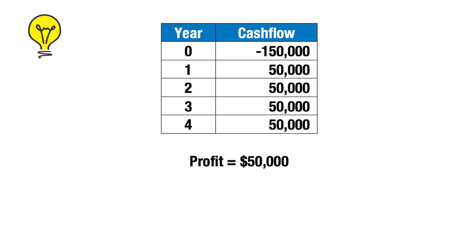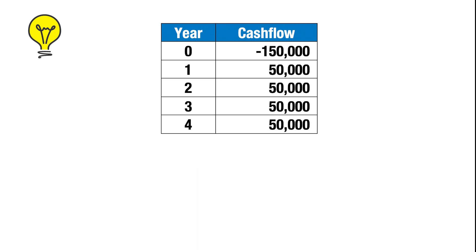Let's say you purchase an asset today for $150,000 and use that asset to generate $50,000 of revenue for the next four years. You might be thinking that you're earning a $50,000 profit, but in reality you aren't because of the time value of money. The $50,000 you're receiving each year is actually worth less today if we consider your cost of capital — let's call that 10%. The net present value is the difference between the present value of your inflows and your initial investment.